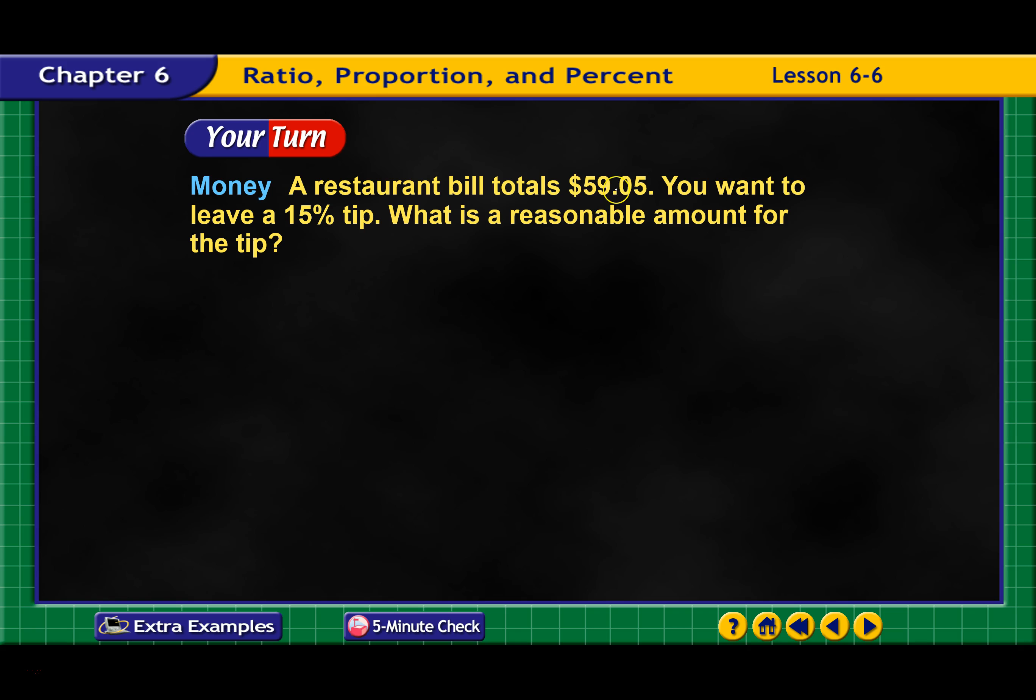Your turn. This looks pretty close to $60. Find a 15% tip. So I need to find 10% and 5%. Well, 10% of 60 is 6. Half of that would be 3. So 15% would be add those together, which would be $9 would be a reasonable tip.